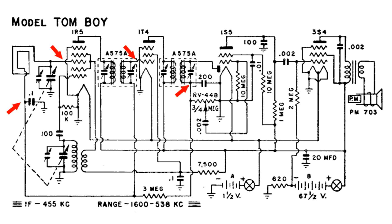And if you run into a weaker station, there'll be less negative voltage, so those first two tubes will amplify more.